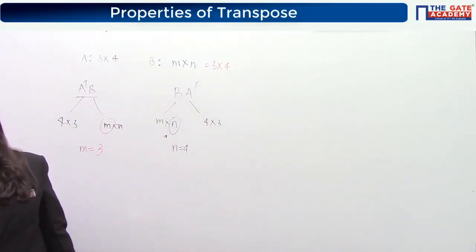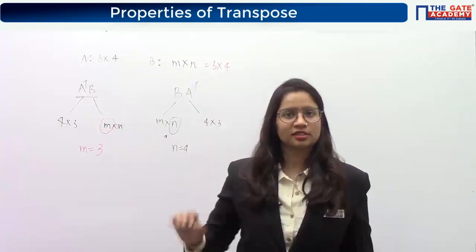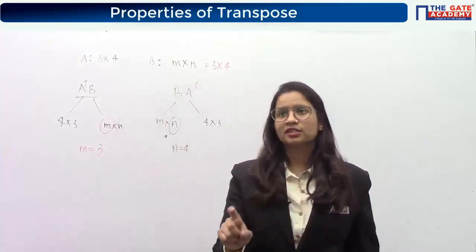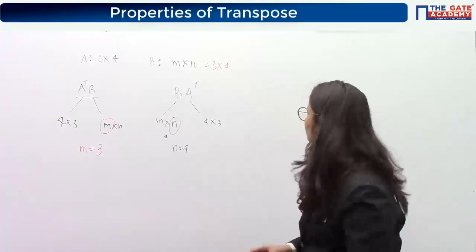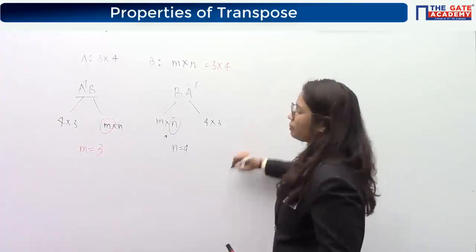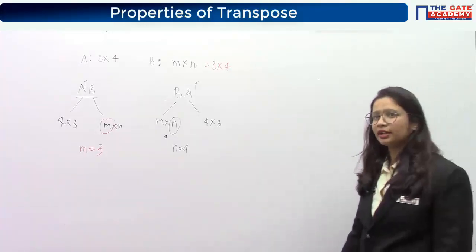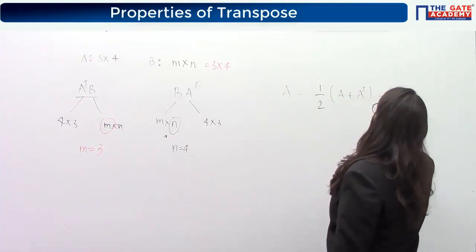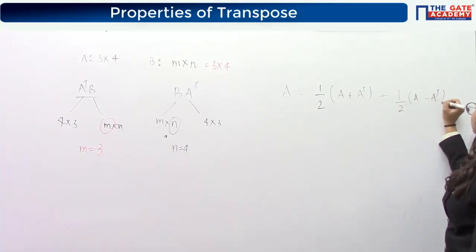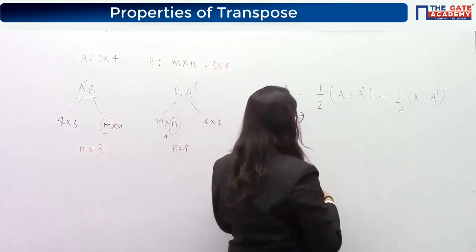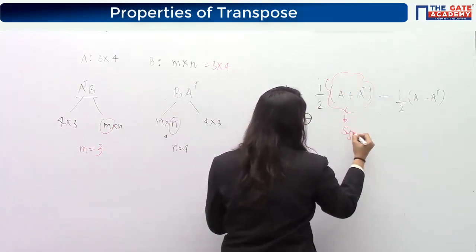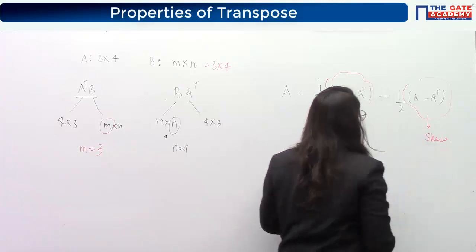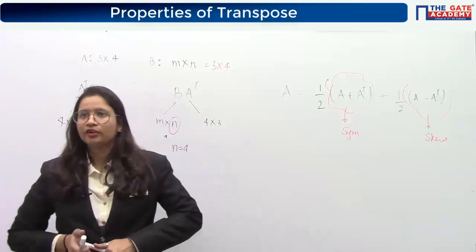Now one important statement: every square matrix can be expressed as a sum of a symmetric and a skew symmetric matrix. Any non-symmetric matrix A can be written as half of A plus A transpose — which is symmetric — plus half of A minus A transpose — which is skew symmetric. If you expand this, you get half A plus half A transpose plus half A minus half A transpose, and the terms cancel to give you A.